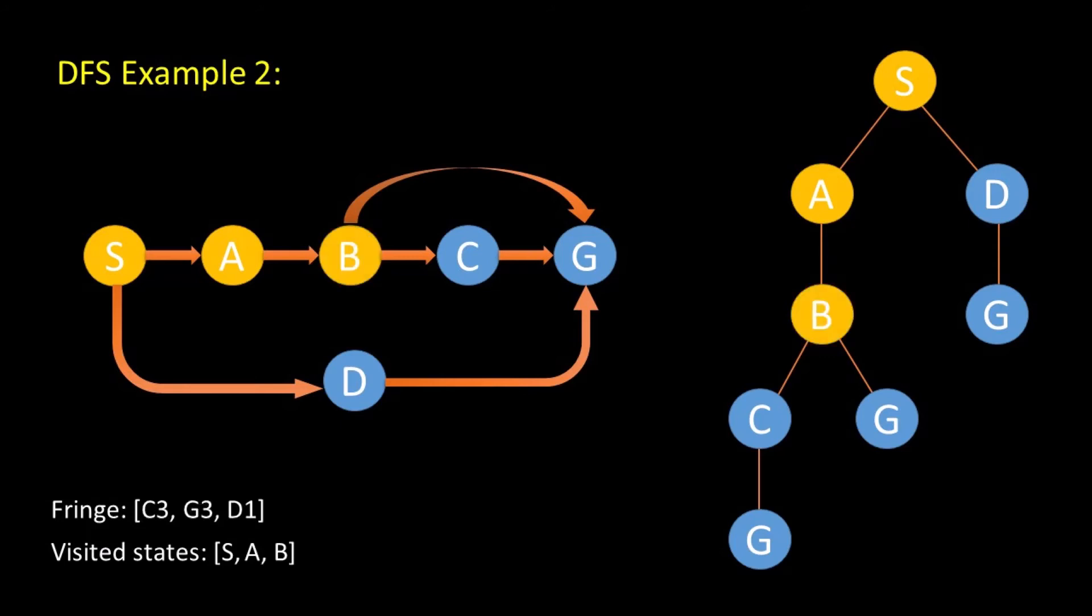We visit B. Is B the goal node? No. So we expand B to get C and G. We visit C. Is C the goal node? No. So we expand C to get G. We visit G. Is G the goal node? Yes. So it expands G and then stops the search.